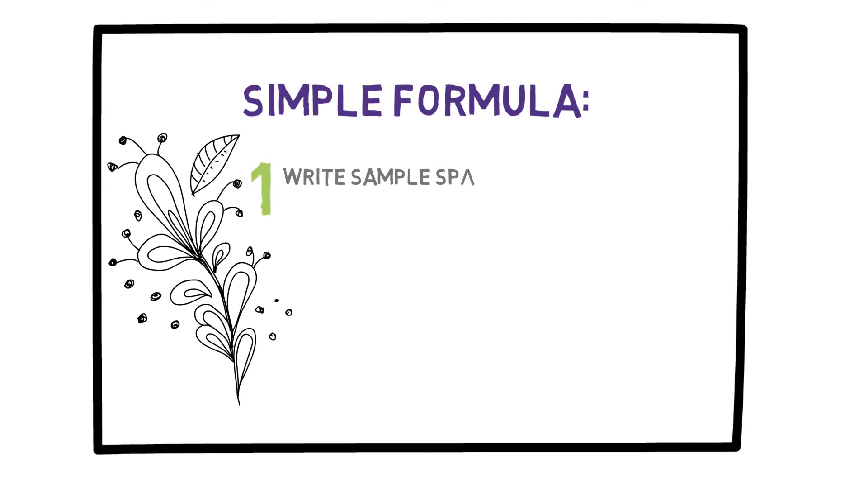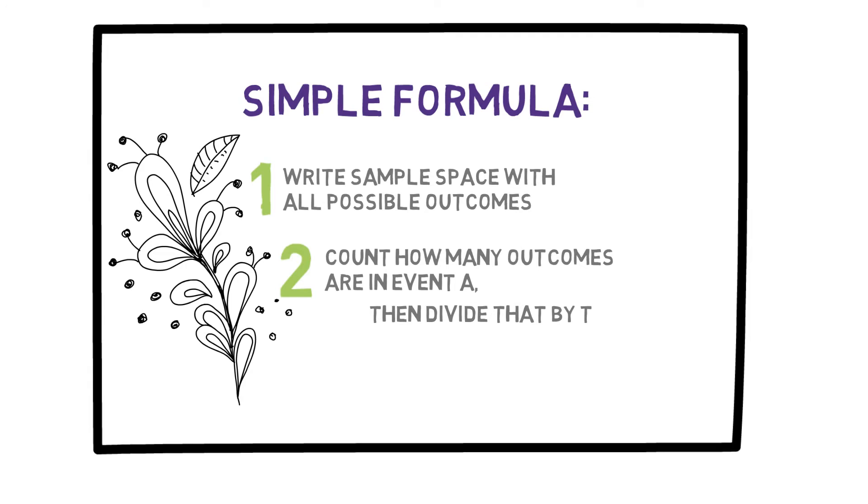First, write the sample space with all possible outcomes. Then to find the probability of event A, simply count how many outcomes are in event A and divide that by the total number of possible outcomes.